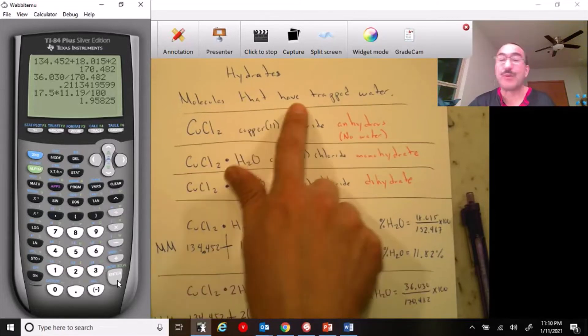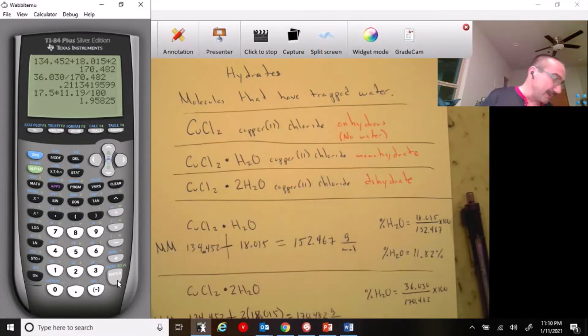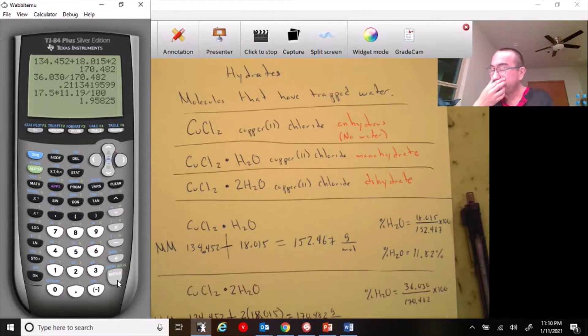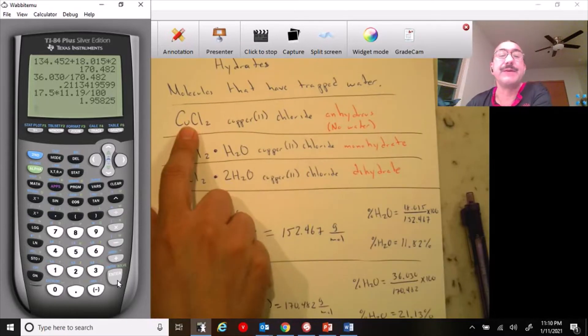Molecules that have trapped water. So these molecules actually have trapped molecules of water inside them. And it's not a new substance with the water, no, but just like a substance and it has trapped water molecules around it. So for example, here have copper to chloride, right? Notice that it's just copper to chloride.